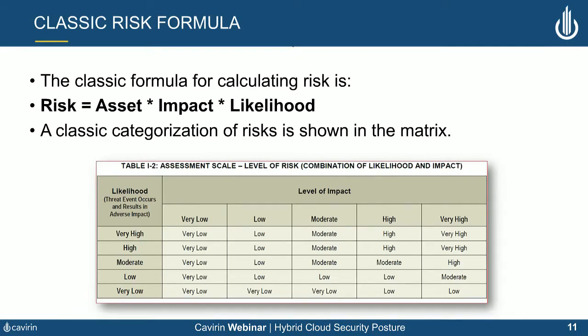At the end of the day, what we're after is quantification of risk, which is indicative of your cyber posture score. Qualitatively, risk values range from low risk to very high risk, with grades depending on the combination of likelihood and impact affecting critical assets. The next set of slides will discuss how to take this qualitative understanding and turn it into a quantifiable version of the risk measure.